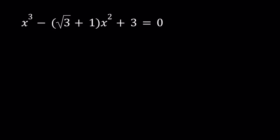Hello everyone. In this video we're going to be solving a cubic equation. We have x cubed minus the quantity square root of 3 plus 1 times x squared plus 3 equals 0, and we're going to be solving for the x values. I'll be presenting three methods even though the third method will not be complete. Let's get started with the first one.